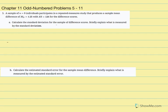Chapter 11 odd number problems 5 through 11. Number 5: a sample of n equals 9 individuals participates in a repeated measure study that produces a sample mean difference of M sub D equals 4.25 with a sum of squared deviations equal to 128 for the difference scores. Calculate the standard deviation for the sample of difference scores.